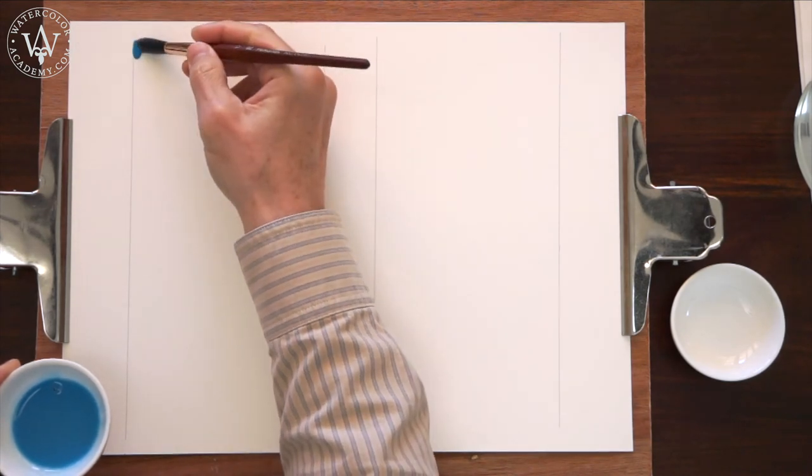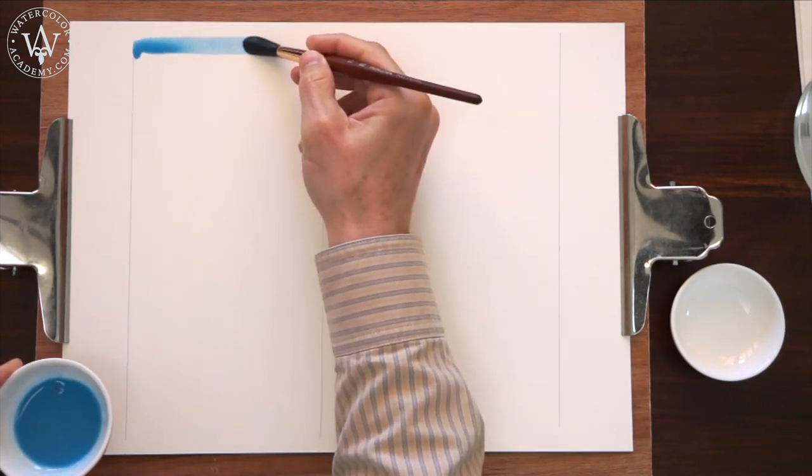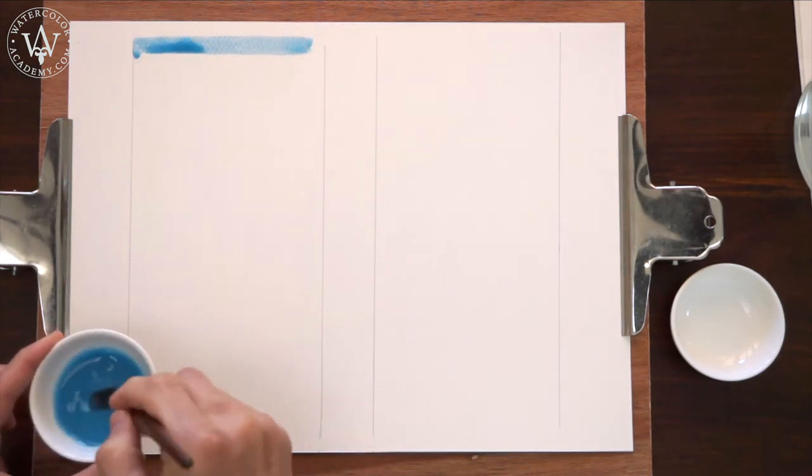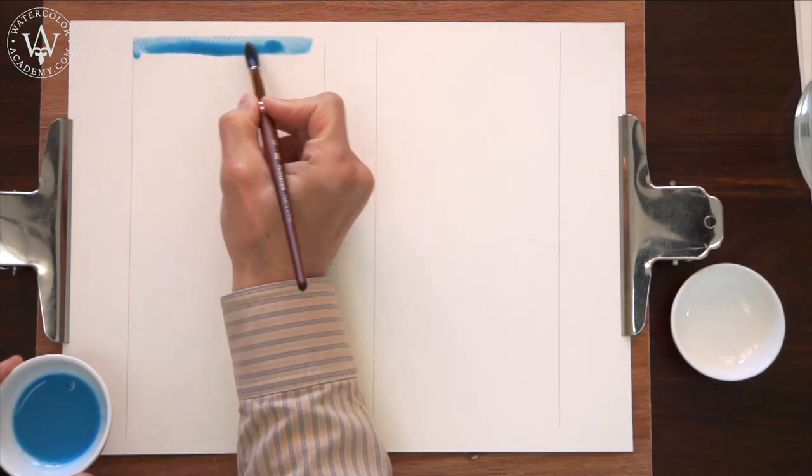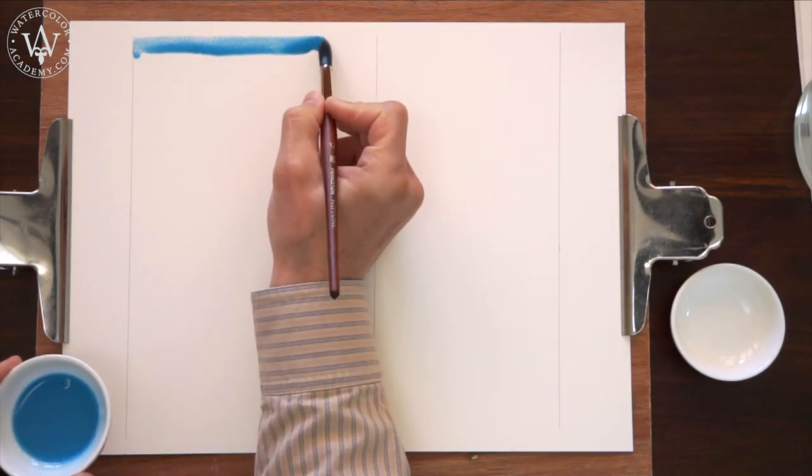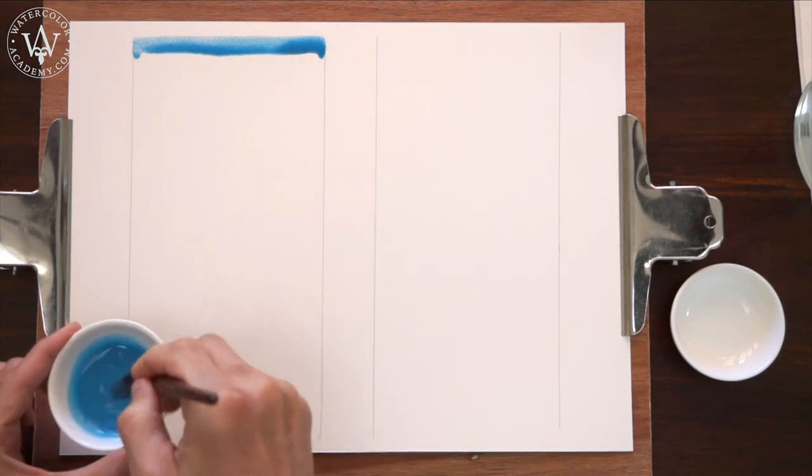The watercolor paper sheet is fixed to the board, and this board is tilted at about 15 degrees. On this sheet, I will make two washes. On the left-hand side, there will be a granulated wash.